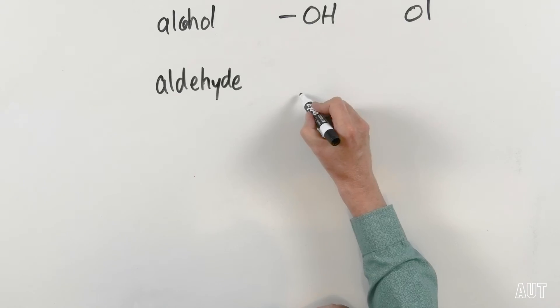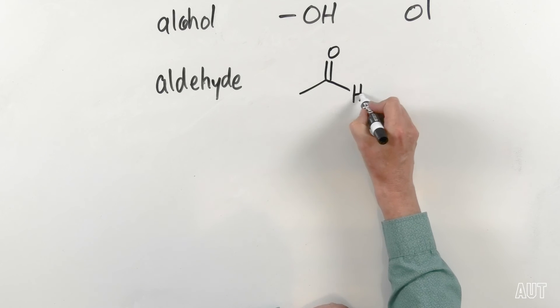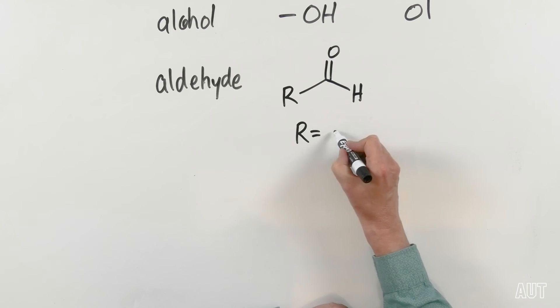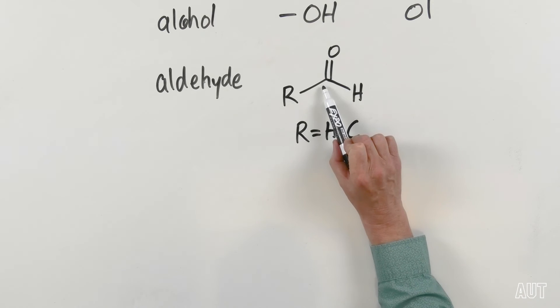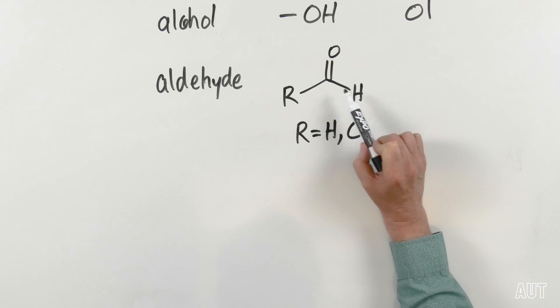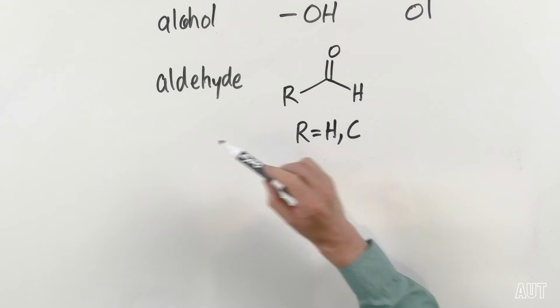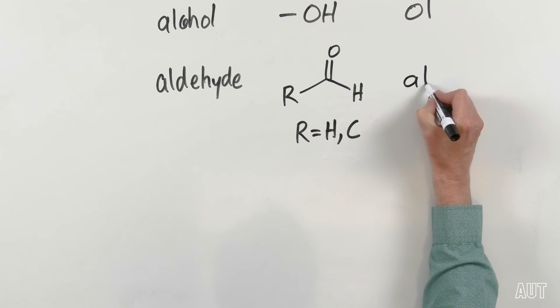So an aldehyde contains this particular grouping of atoms where R could be in this case H or C. So what have we got? We've got a carbon double bonded to an oxygen. We've got a carbon single bonded. That same carbon single bonded to a hydrogen and either a carbon or a hydrogen. And if you have an aldehyde then its suffix is al.